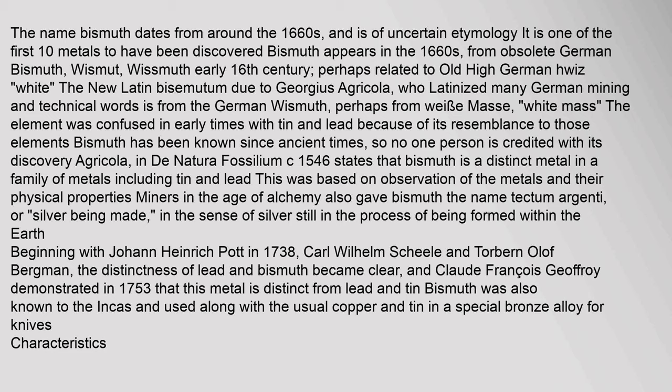The element was confused in early times with tin and lead because of its resemblance to those elements. Bismuth has been known since ancient times, so no one person is credited with its discovery. Agricola in De Natura Fossilium (c. 1546) states that bismuth is a distinct metal in a family including tin and lead. Miners in the age of alchemy gave bismuth the name 'tectum argenti,' or 'silver being made.' Beginning with Johann Heinrich Pott in 1738, Carl Wilhelm Scheele and Torbern Olaf Bergmann clarified the distinctness of lead and bismuth, and Claude-François Geoffroy demonstrated in 1753 that this metal is distinct from lead and tin. Bismuth was also known to the Incas and used in a special bronze alloy for knives.